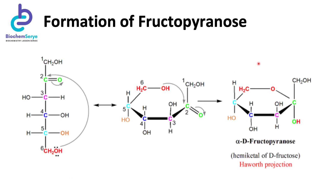In the second scenario, the hydroxyl group attached to carbon 6 attacks the carbonyl group at C2, resulting not in a five-membered ring but in a six-membered ring — one, two, three, four, five, six. This is the pyranose form of fructose, and the product is called fructopyranose, in analogy with the six-membered ring of pyran.